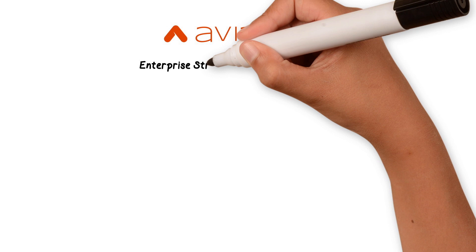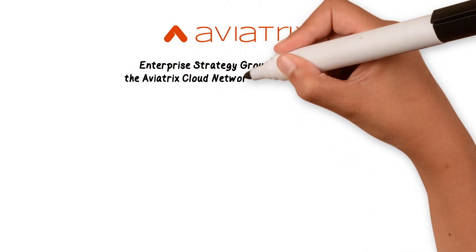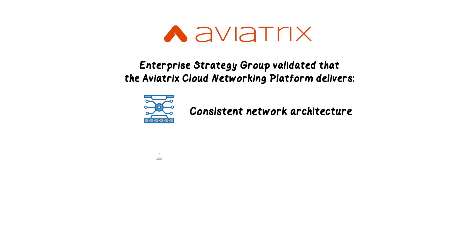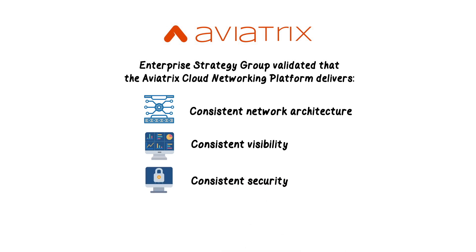Enterprise Strategy Group recently validated how the Aviatrix Cloud Networking Platform can simplify your multi-cloud networking efforts. Based on our observations of product demonstrations, we found that the platform offers consistent network architecture by applying the same network constructs, regardless of the number of cloud providers used. Consistent visibility and troubleshooting as Aviatrix Copilot provides a common interface for all network traffic. Consistent security by enabling organizations to apply policies to network traffic traversing multiple public clouds, as well as providing end-to-end encryption. We also validated that the platform delivers a consistent way to automate workflows for interconnecting multiple clouds, as Aviatrix is a Terraform provider.